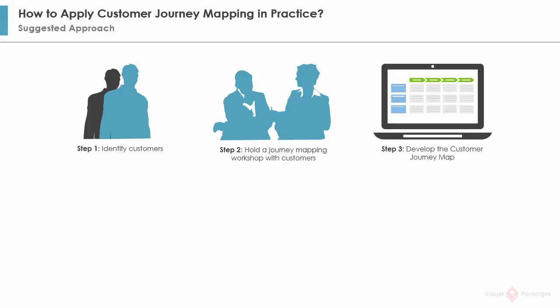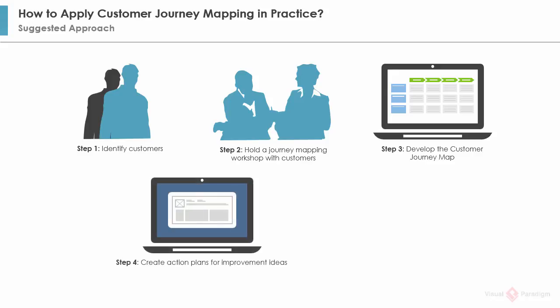Very often steps 2 and 3 are iterative, which means that customers will review and comment on the map, and then you revise it. Customers will review again until the map can accurately reflect the customer's experience. Then improvement opportunities are identified. The next step is to create action plans for discussing and implementing the improvement ideas stated in the map.